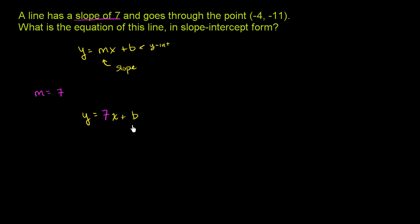And now what we need to do is figure out b. They give us one more piece of information. They say that the line goes through the point negative 4, negative 11. So that tells us that when x equals negative 4, then y equals negative 11.